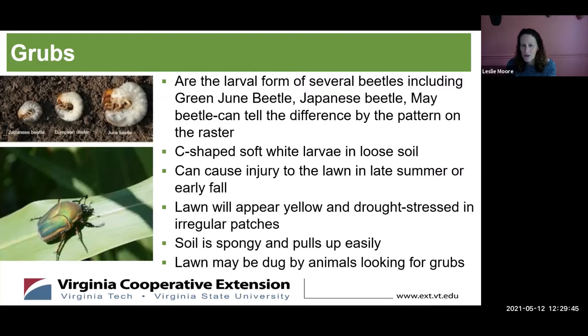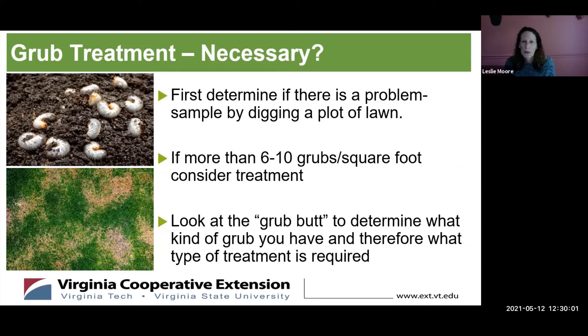The lawn may also look like creatures are digging in it, because they are — foxes, raccoons, and dogs like to eat grubs. You need to determine whether grub treatment is necessary by digging up an area of your lawn and counting the grubs. If there are more than six to ten grubs per square foot, then consider treatment. Look at the grub's rear end to determine what kind it is, and therefore what treatment is required. This inspection should be done in mid-summer if you're having a problem.